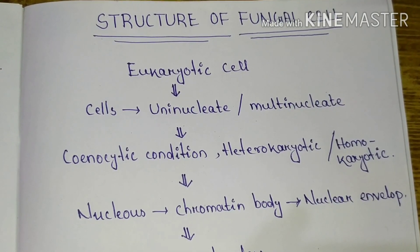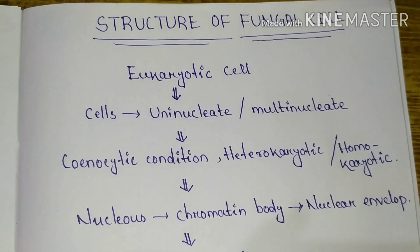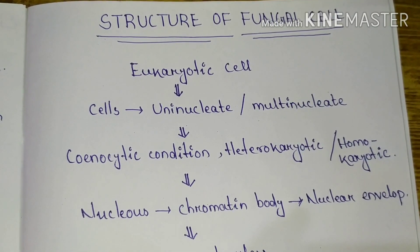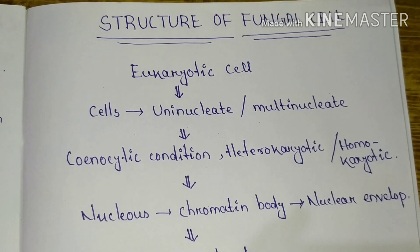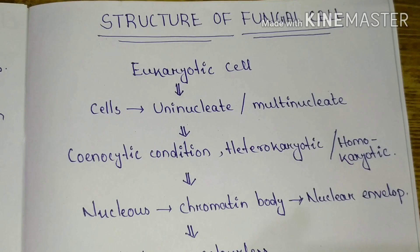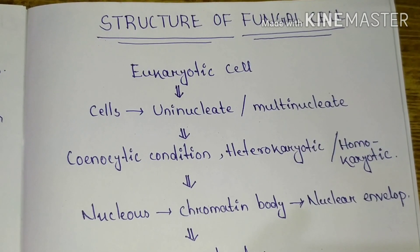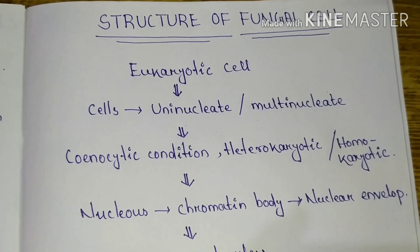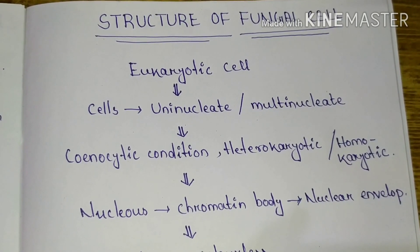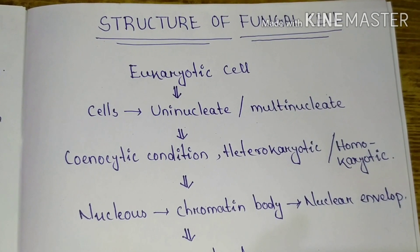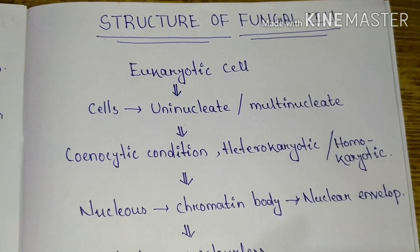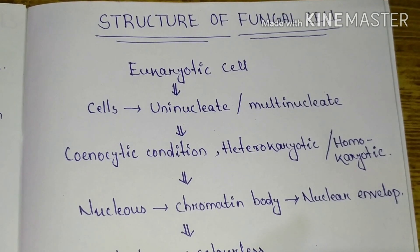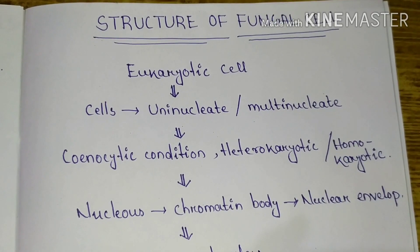During the multinucleate condition, if there is no partition wall or septa present, the cell may be described as being in a coenocytic condition.